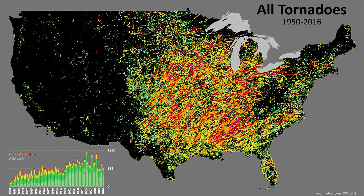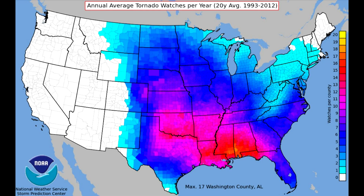Just this century, tornado alley has shifted. It used to be almost exclusively the Great Plains as far north as the Dakotas or Nebraska, but it's shifted south and east — Mississippi and Alabama are now just as bad as Oklahoma and Texas for tornadoes. It can actually be more of a risk in the southeast because fewer people have basements for protection and more folks live in mobile homes. In the Midwest people are more used to big tornadoes and more likely to have a basement.